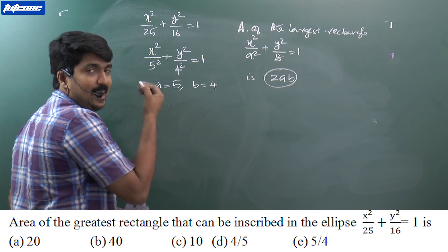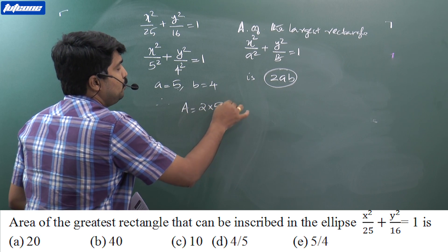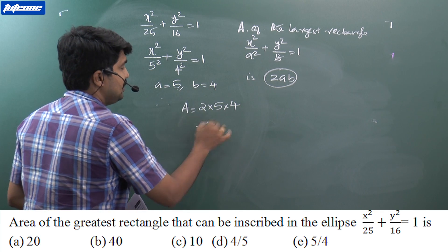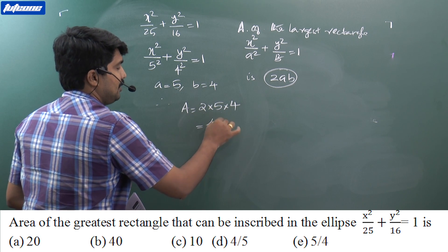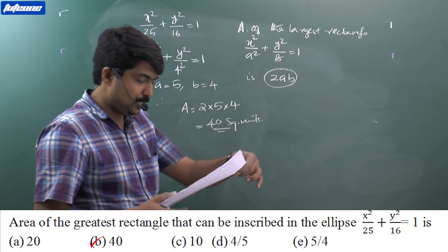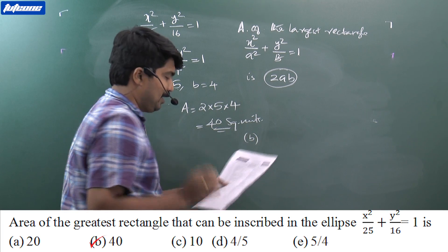Therefore the required area is equal to 2 × A × B, that is 2 × 5 × 4. So it is 40 square units, so our option is option B, 40 square units.